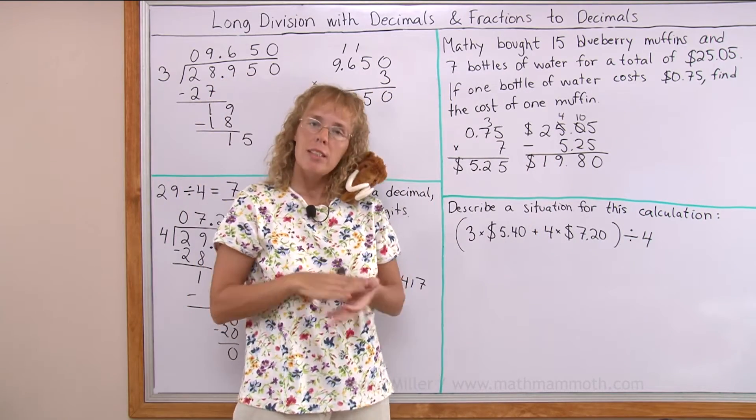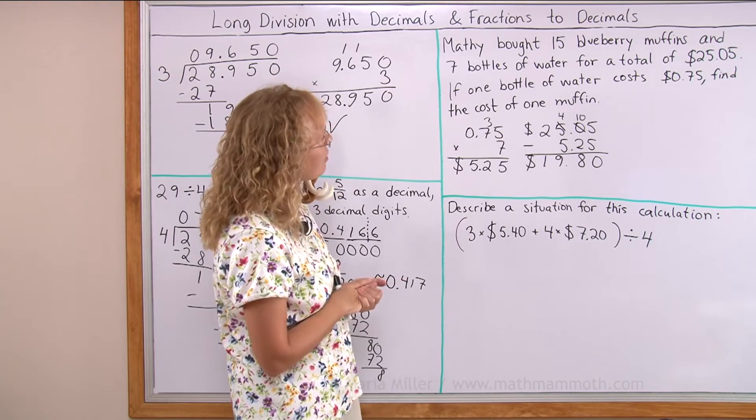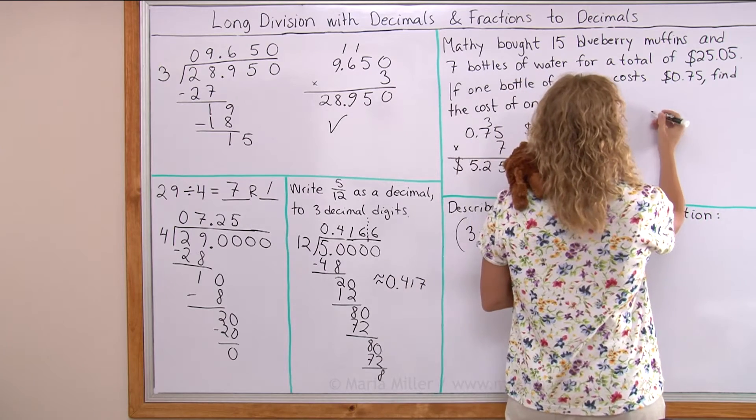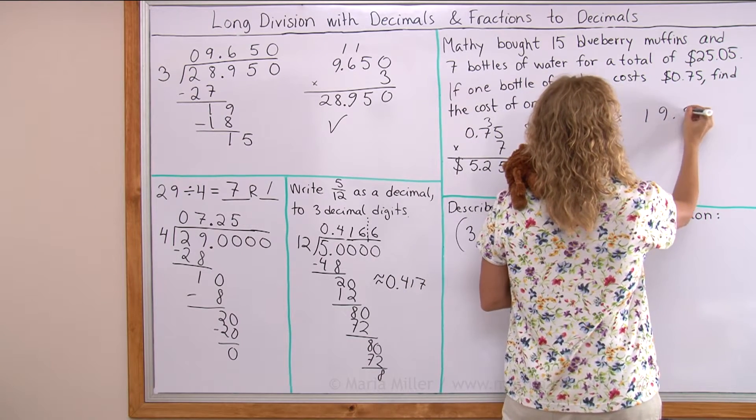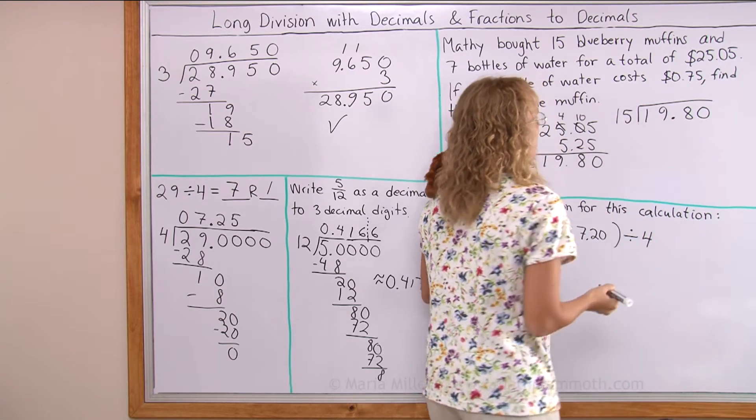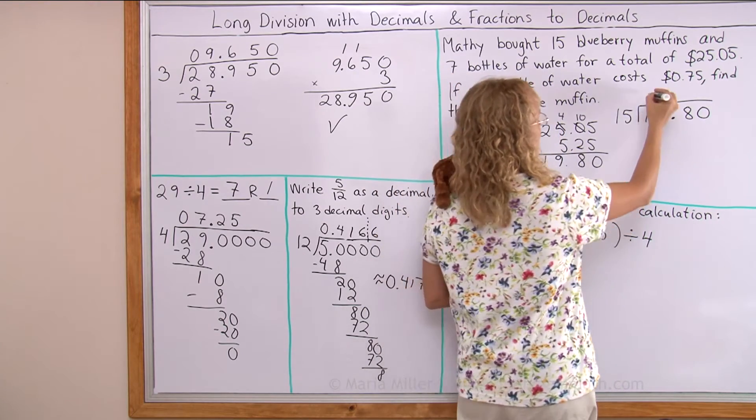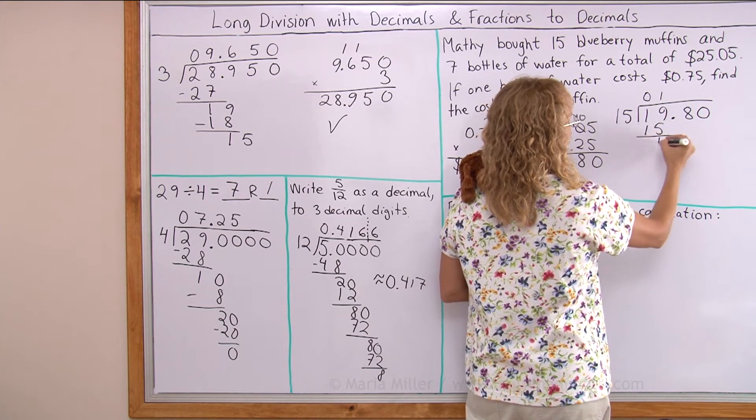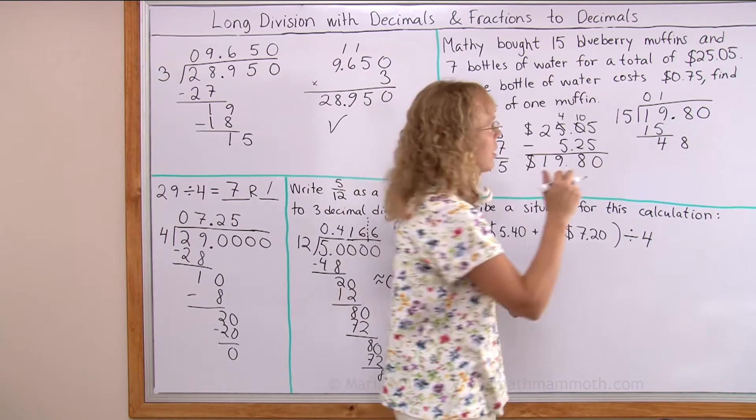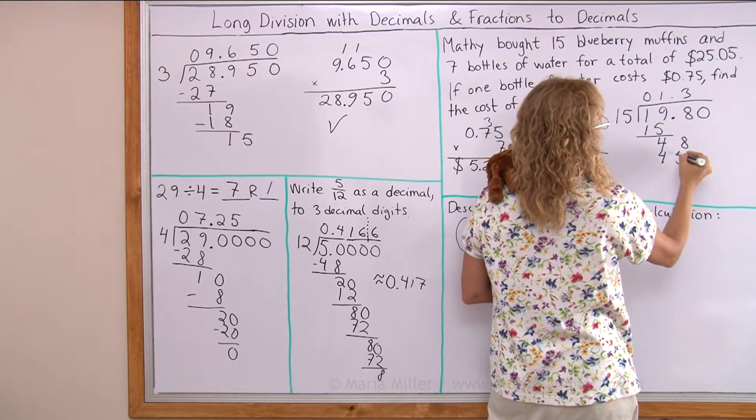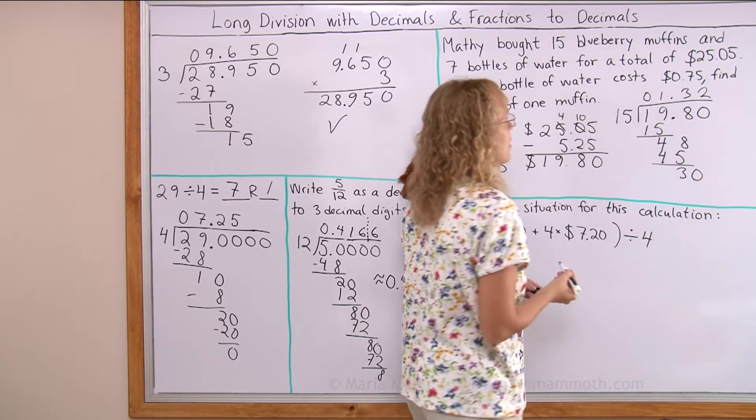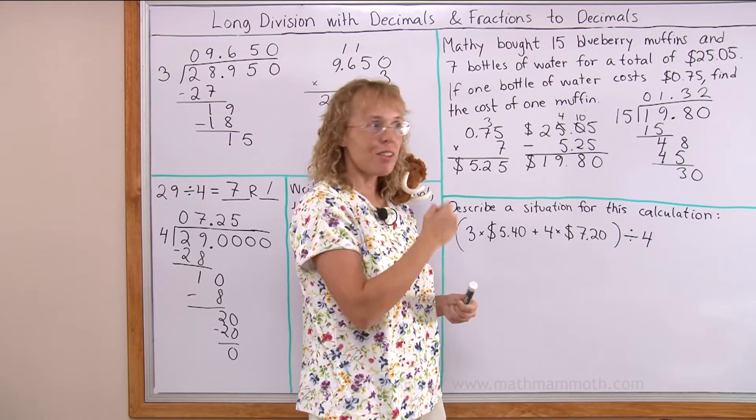$19.80. All the muffins cost $19.80 divided by 15. 15 goes to 19 exactly once, right? 4. Then drop down 8. 15 goes to 48, 3 times we get 45. And then 30, 2 times exactly. That's great. So the division is even and the answer is $1.32.